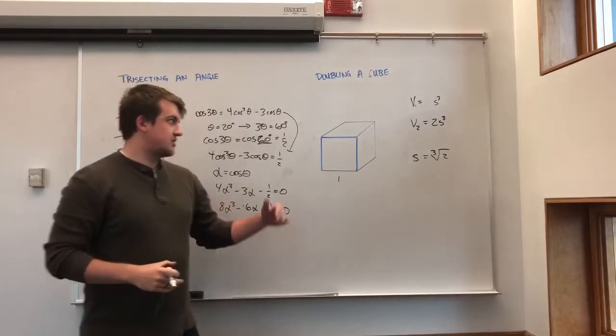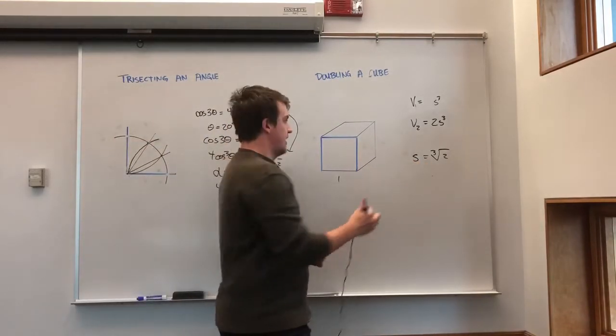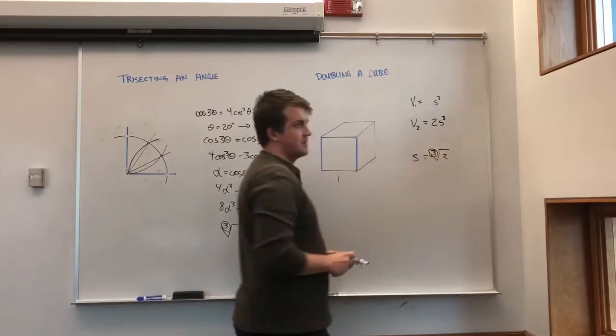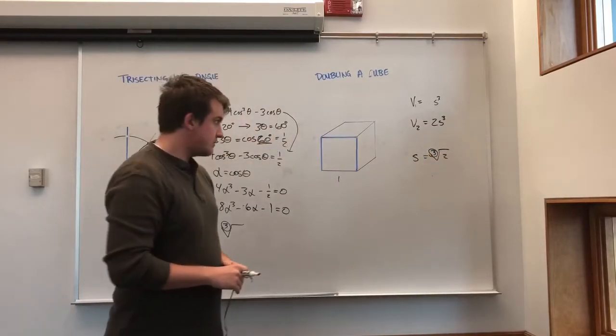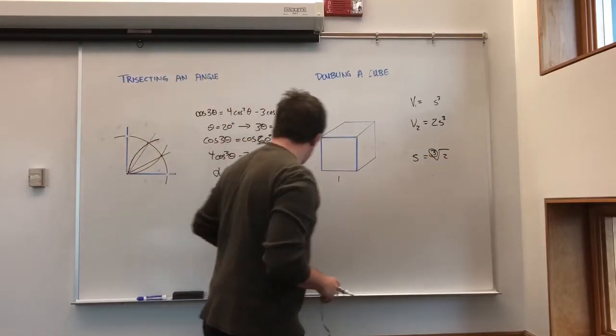Which is also not constructible, given our definition, that the radical needs to be the degree power of 2. Thus, we see in both cases, we cannot construct using a compass and a straight edge.